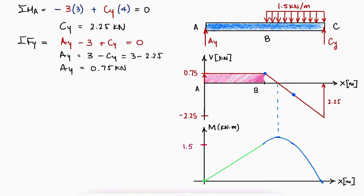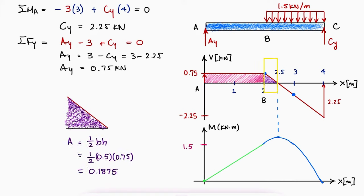Connecting the slopes, we find the overall shape of the bending moment diagram. To find the maximum moment, we can add the area under the curve between B and the slope of 0 to the 1.5 value the moment had at B.